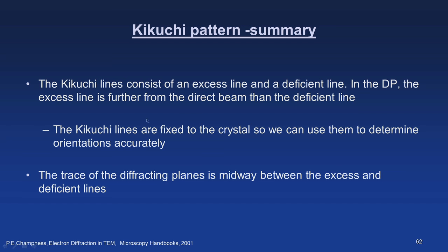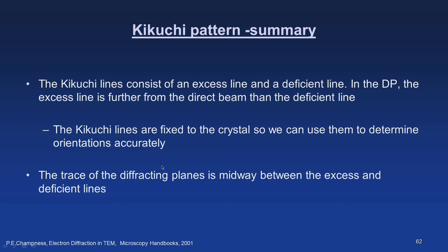Summary: Kikuchi lines consist of an excess line and a deficient line. In the diffraction pattern, the excess line is further from the direct beam than the deficient line. The Kikuchi lines are fixed to the crystal, so we can use them to determine orientation accurately. The trace of the diffracting planes is midway between the excess and deficient lines. Now we will move on to another important diffraction phenomenon: convergent beam electron diffraction in TEM.